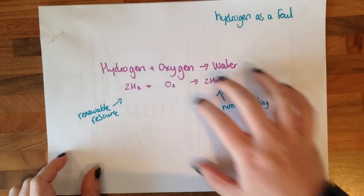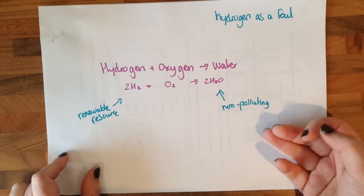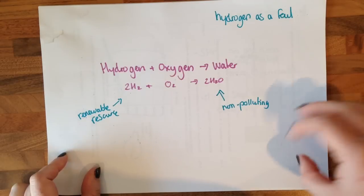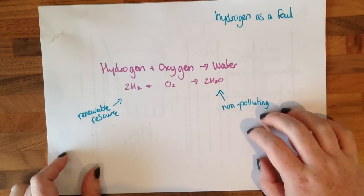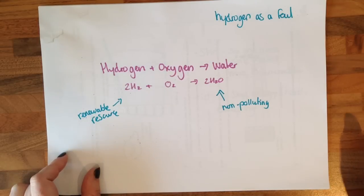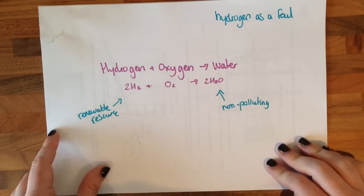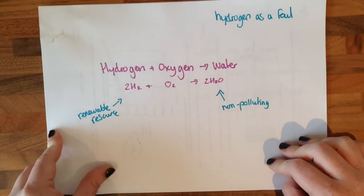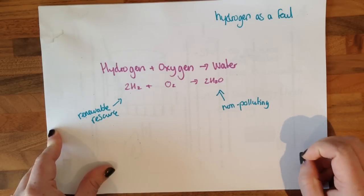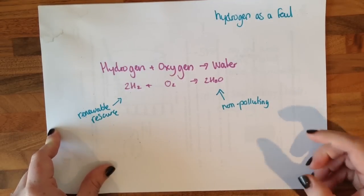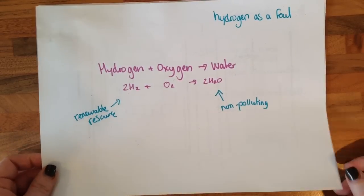But there are a few problems with this. For example, cars are very expensive to develop. Hydrogen fuel stations aren't developed here — you'd have to convince the government to invest in that and convince everyone to buy a new car. Hydrogen storage is very dangerous, very explosive, and it takes up a lot of space. It is a really good fuel for the future and really good for climate change, but it's not quite there yet in terms of readiness.